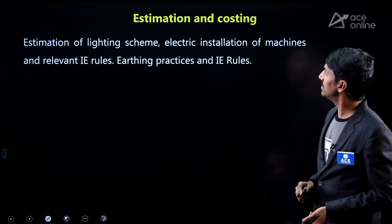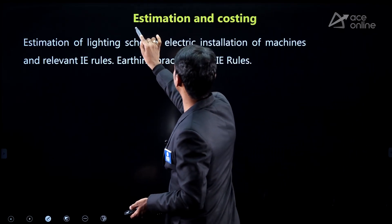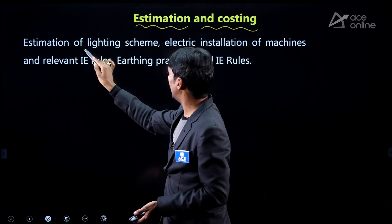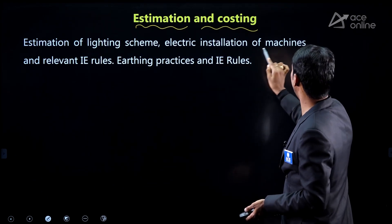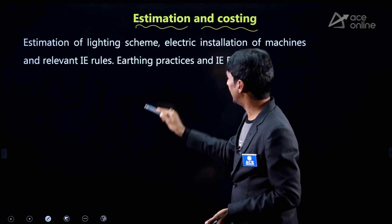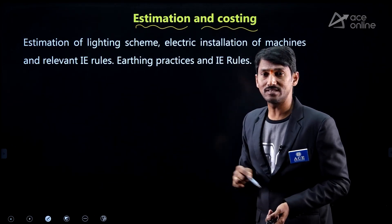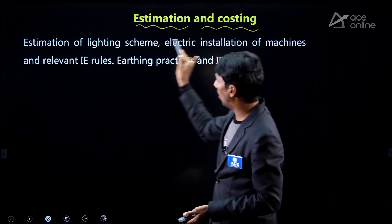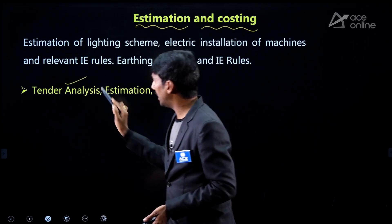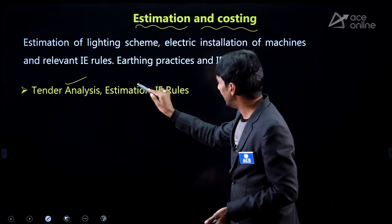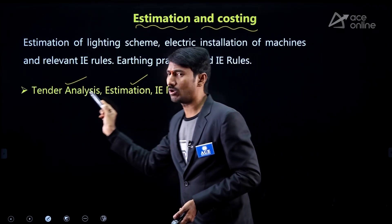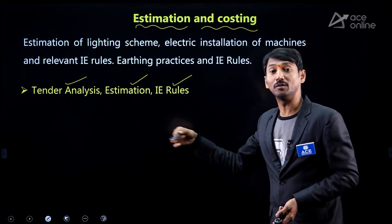The next subject is Estimation and Costing. The syllabus includes estimation of lighting schemes, electrical installation of machines, relevant IE rules, and earthing practice. From this, the topics to focus on most are: tender analysis, estimation process and concepts, and IE rules — concentrating here gives a better chance of scoring well.